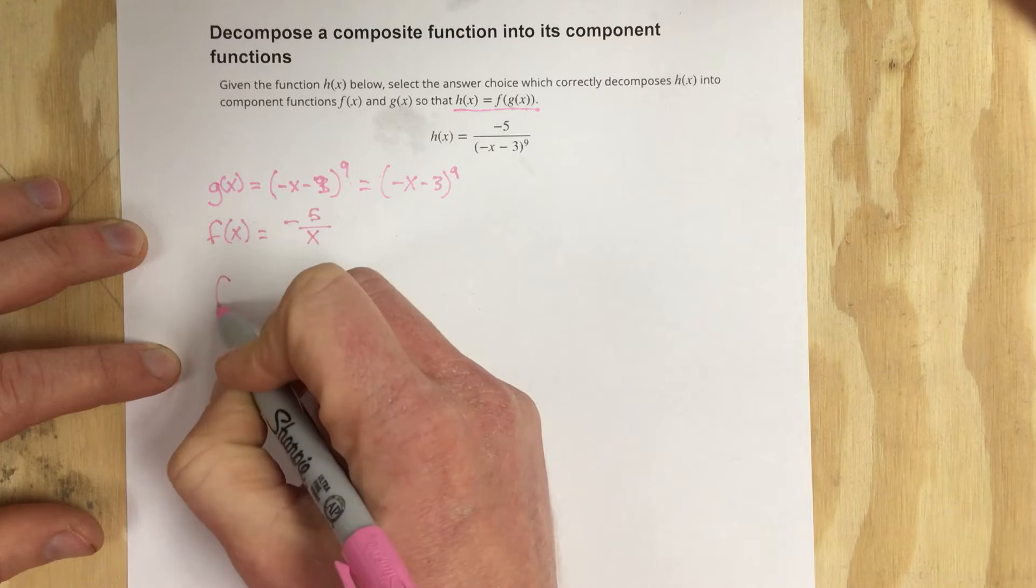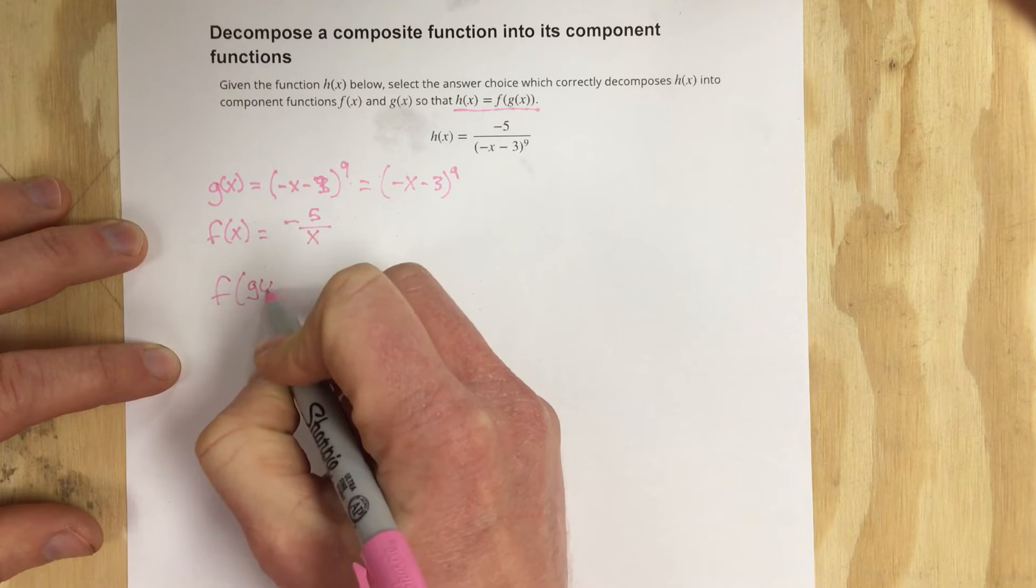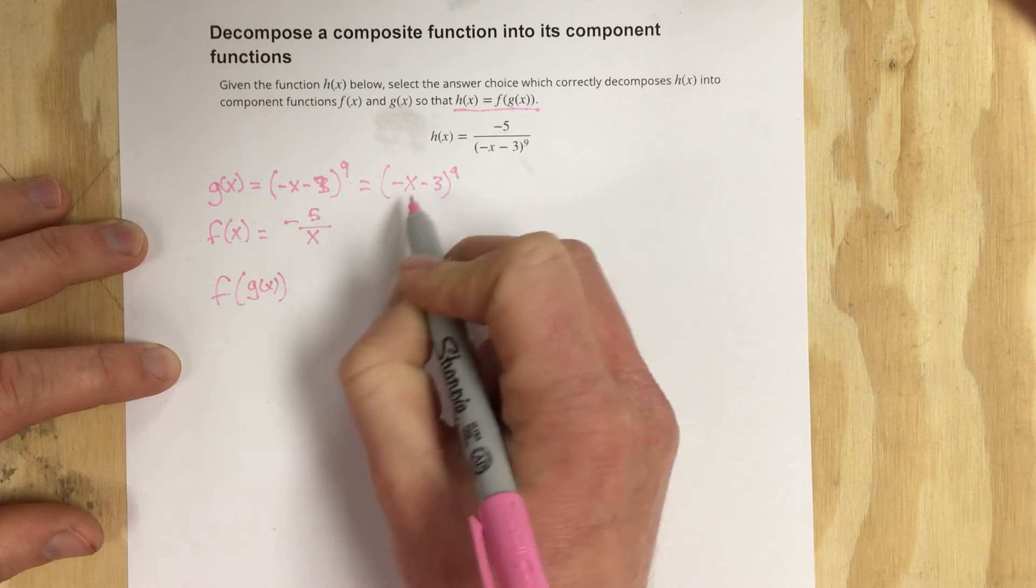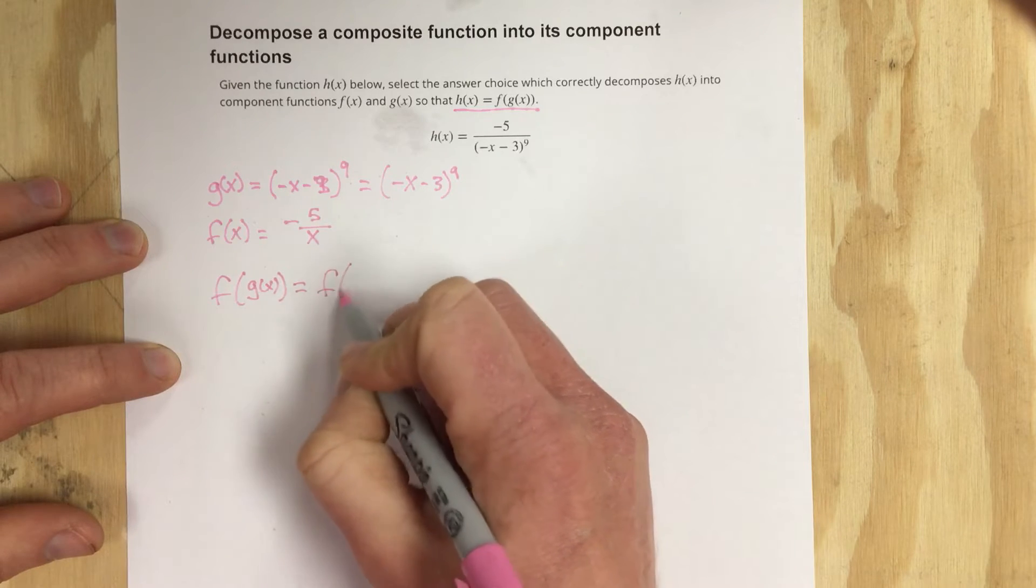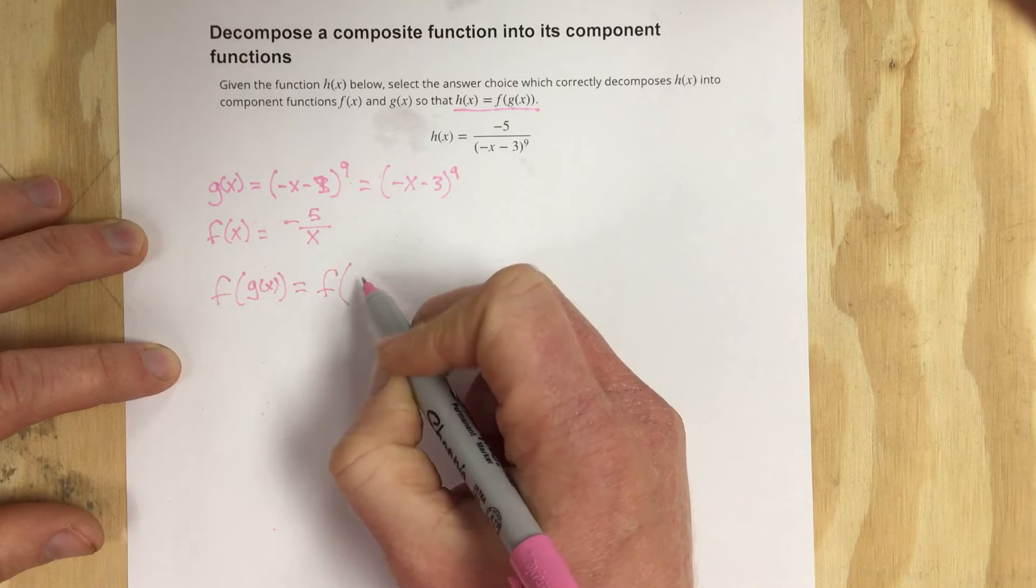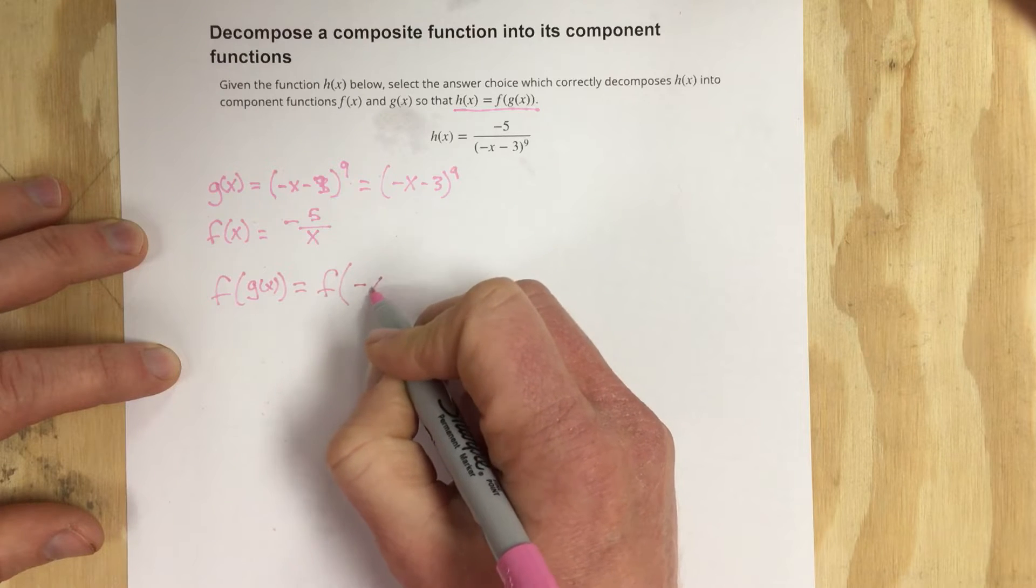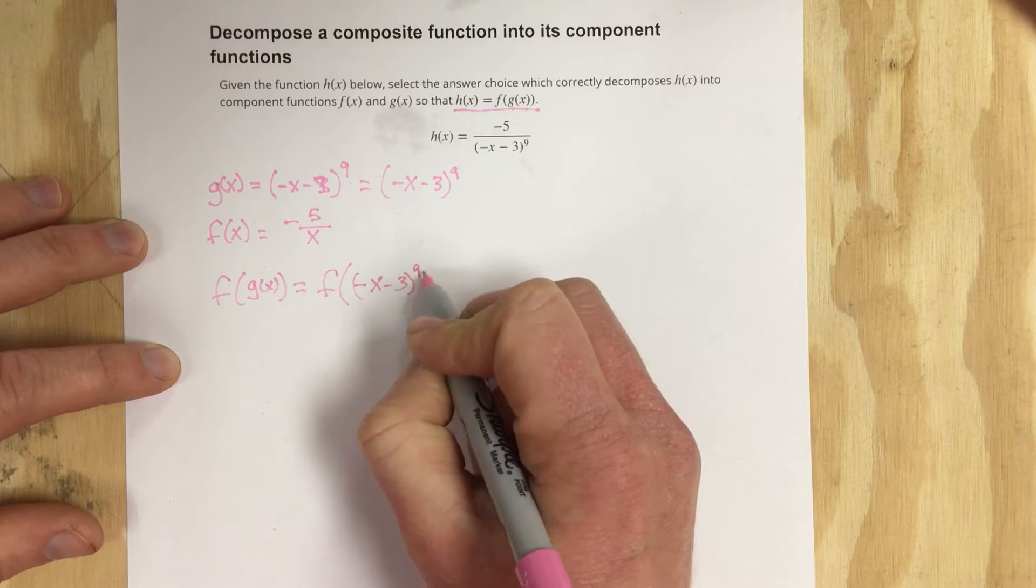How this would work I would write this as f of g of x if I were composing these two functions. And that would be f with an input of g which would be negative x minus 3 to the 9th.